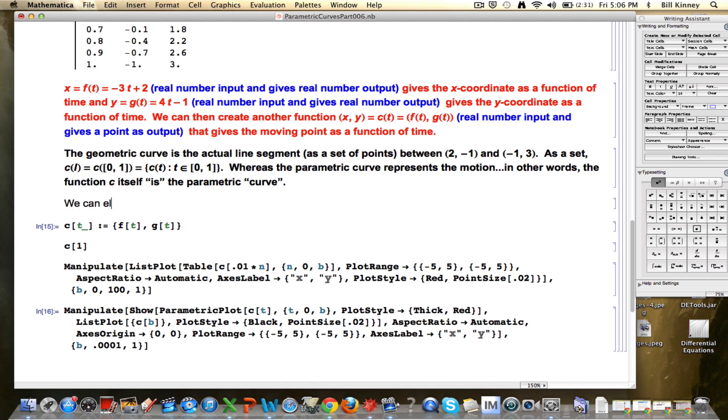We can eliminate the parameter t by essentially solving one of these equations, it doesn't matter which one, up here, for t in terms of either x or y, depending on which one you pick, and then substituting that expression for t into the other equation to get rid of the t, to eliminate it, to just get an equation involving x and y.